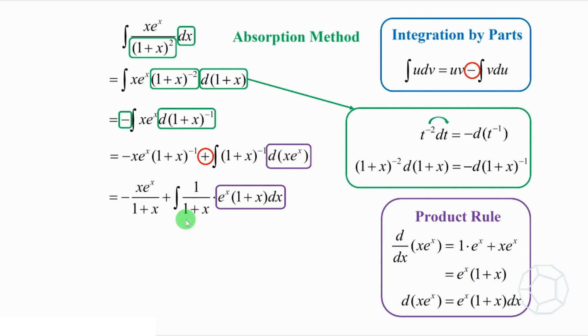Can you see something nice here? Right! We can cancel out the term 1 plus x. Then, the integral is much simpler. It is equal to e to the power of x dx, which is clearly e to the power of x.